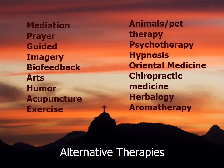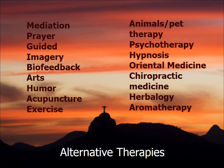A few other alternative therapies to consider: meditation, prayer, guided imagery, biofeedback, art, humor, acupuncture, exercise, animals and pet therapy, psychotherapy, hypnosis, oriental medicine, chiropractic medicine, herbology, aromatherapy, yoga, and tai chi. In China, if you're diagnosed with arthritis, your doctor prescribes tai chi — go to the park and do tai chi. We might consider some of these approaches here as we look at obesity rates and chronic illnesses that can't be cured by allopathic medication alone.